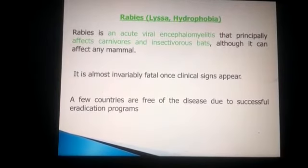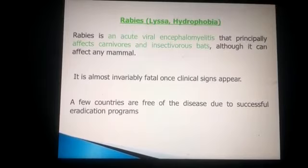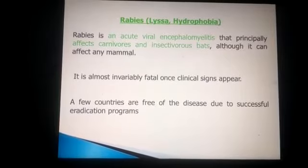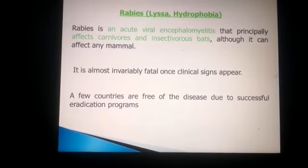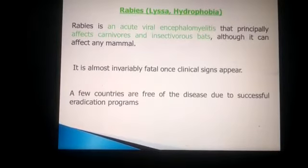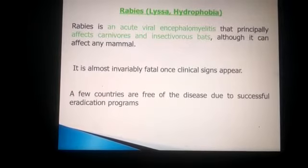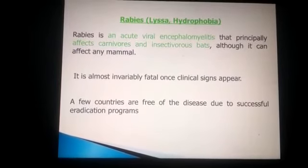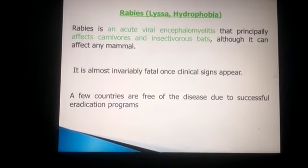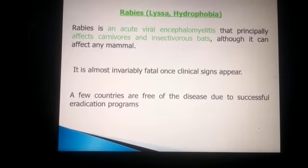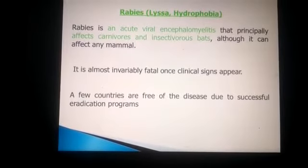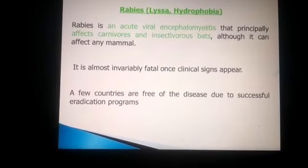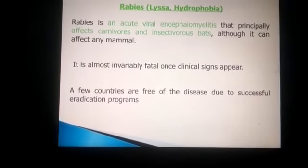Today we will discuss a very important disease of livestock and bat animals, that is rabies. Rabies is an acute viral disease that principally affects carnivores and insectivorous bats, although it can affect any animal. It is almost invariably fatal once clinical signs appear.